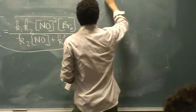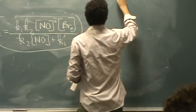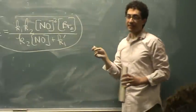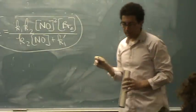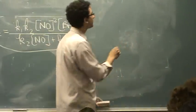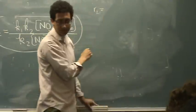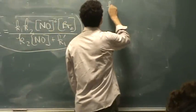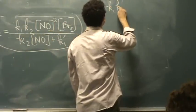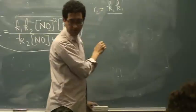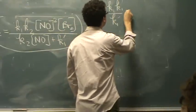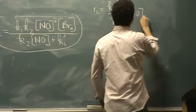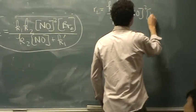If RDS is the second reaction, which I had done in class earlier, your answer was R2 equals K2K1 over K1 prime, NO squared BR2.